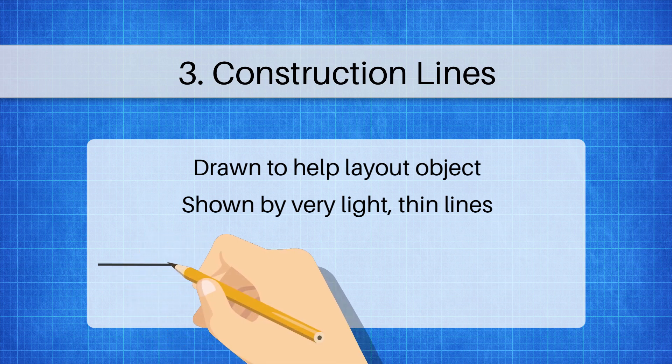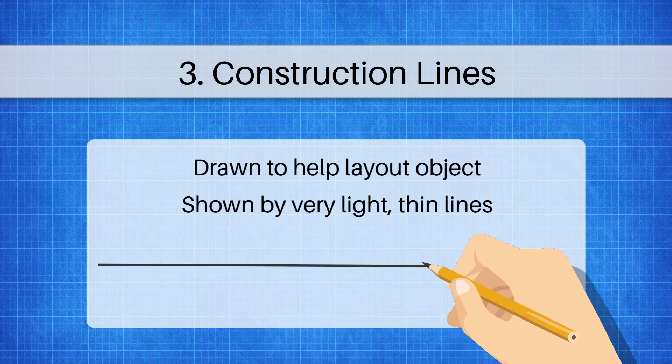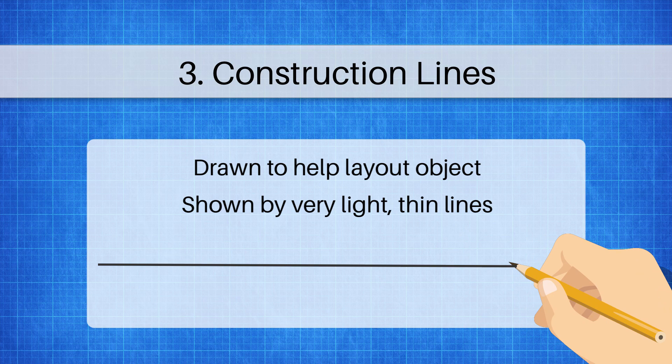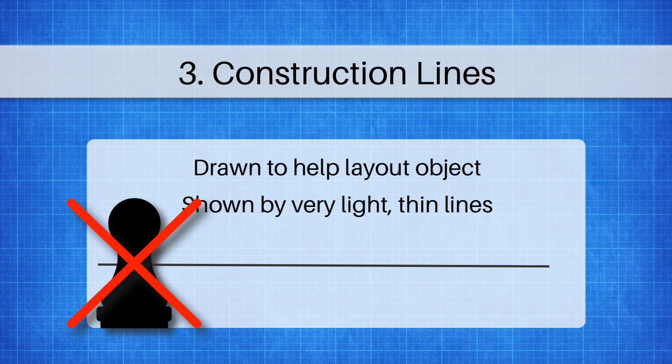There are other types of lines as well but construction lines are really the lowest level of precedents out of everything. They are there to be erased, they are there to be used. If you've ever played chess, they're kind of like the pawns. They're there to get killed but to help set up the strategy for all the other things that are going to happen after that.